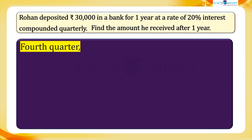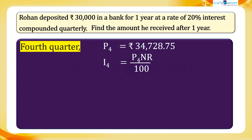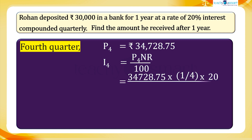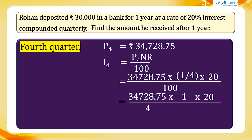For the fourth quarter, principal P4 equals 34,728.75 rupees. Therefore, the interest for the fourth quarter: I4 equals P4 × N × R divided by 100, equals 34,728.75 × (1/4) × 20, whole divided by 100, equals 34,728.75 × 1 × 20, whole divided by 4 × 100. I4 equals 1,736.44 rupees.